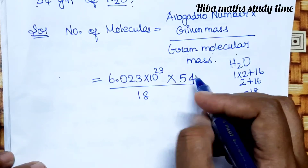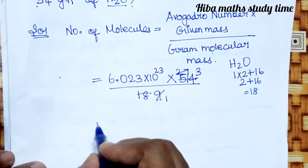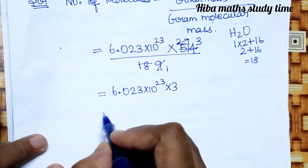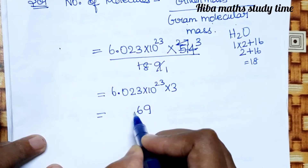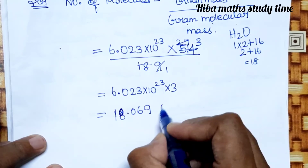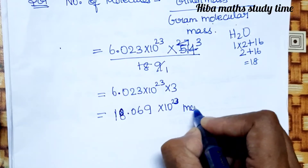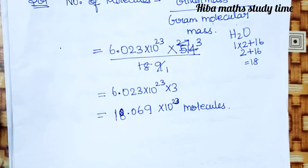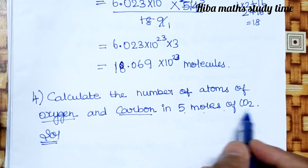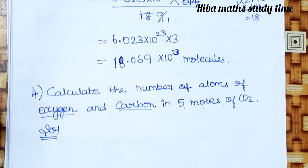Working through the multiplication table: 54 divided by 18 equals 3 moles. So 3 into 6.023 into 10 power 23 gives 18.069 into 10 power 23, which equals 1.8069 into 10 power 24 molecules of H2O. Now in 5 moles of CO2 we can work differently.